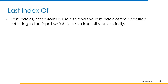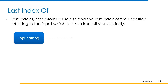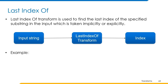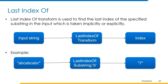Last index of transform is used to find the last index of the specified substring in the input string. If the substring does not match with the input string, it returns minus 1. If the substring occurs multiple times, the transform returns the location of the last occurrence. We provide the input string and the substring to search for, and get the last index as output. For example, if ABC ABC ABC is passed as input with substring B, then index 7 is returned as output, since the last occurrence of B is at index 7.